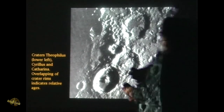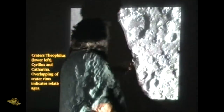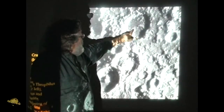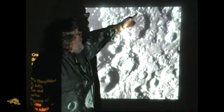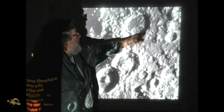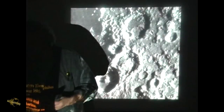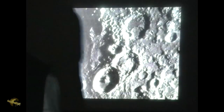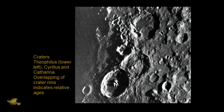Here we can see a crater within a crater. That's another thing that we see duplicated in the Carolina Bays.